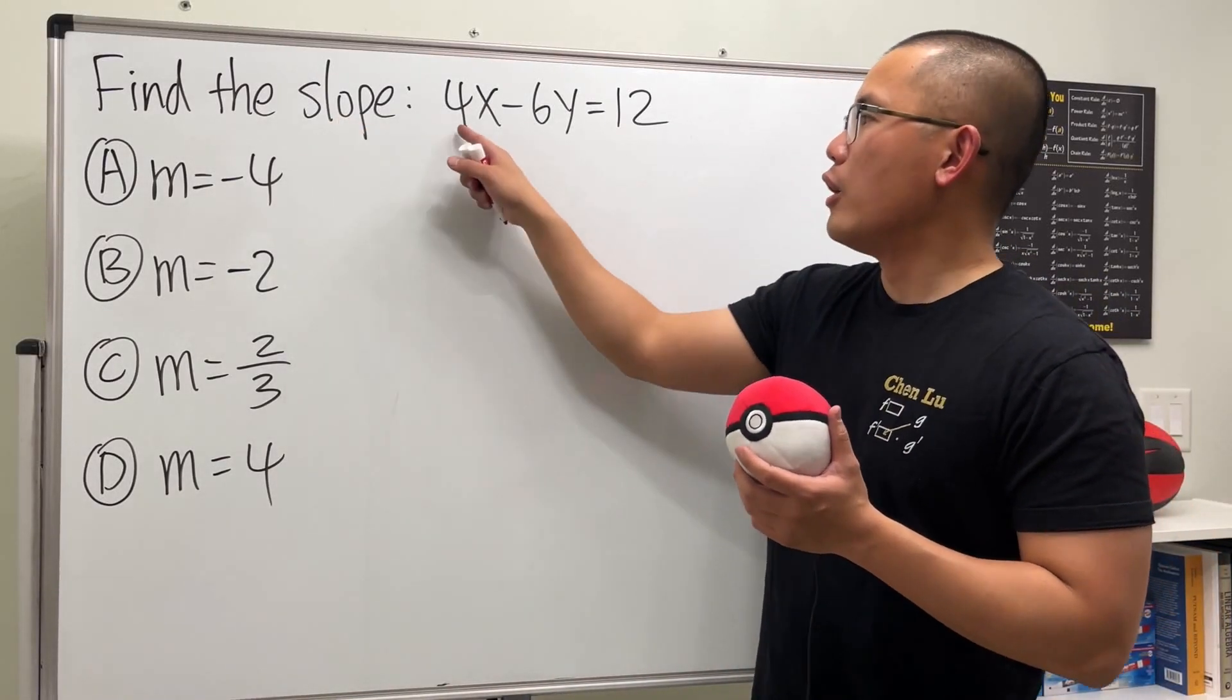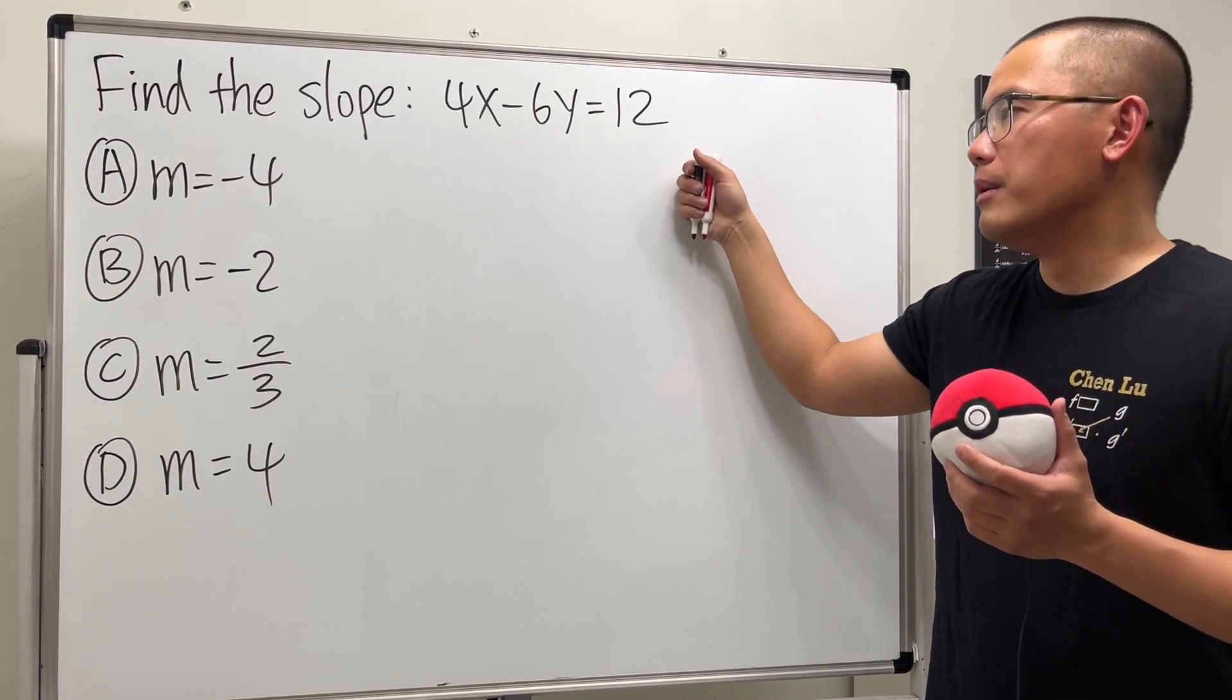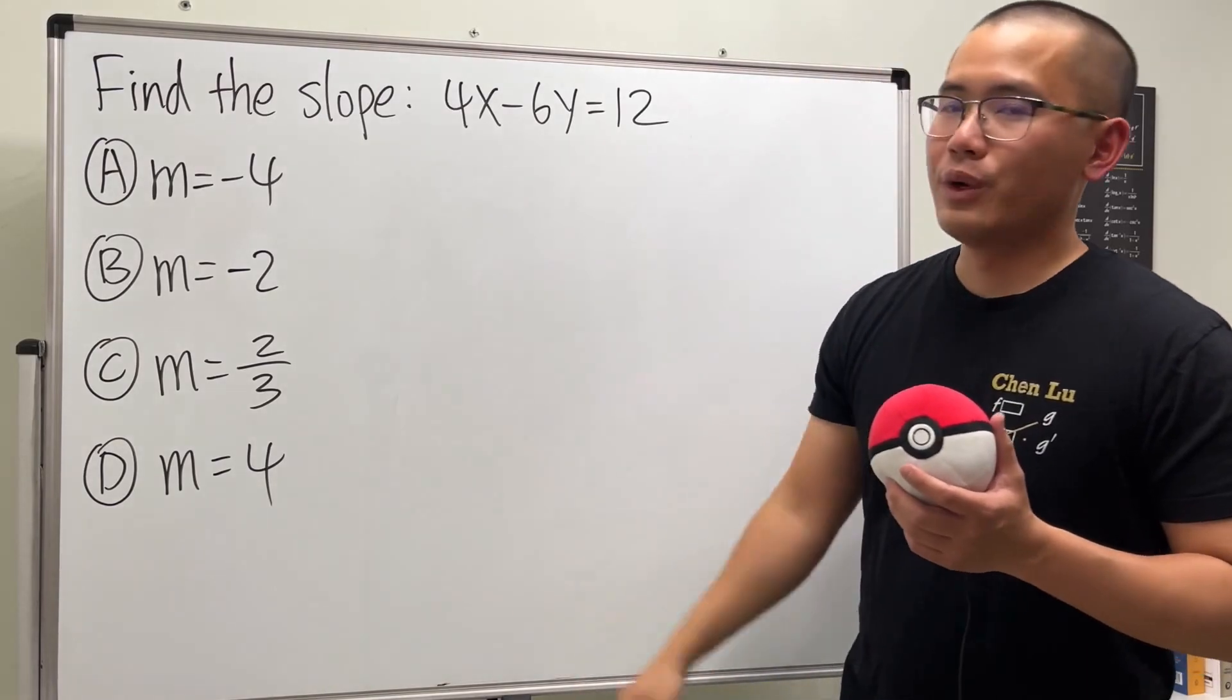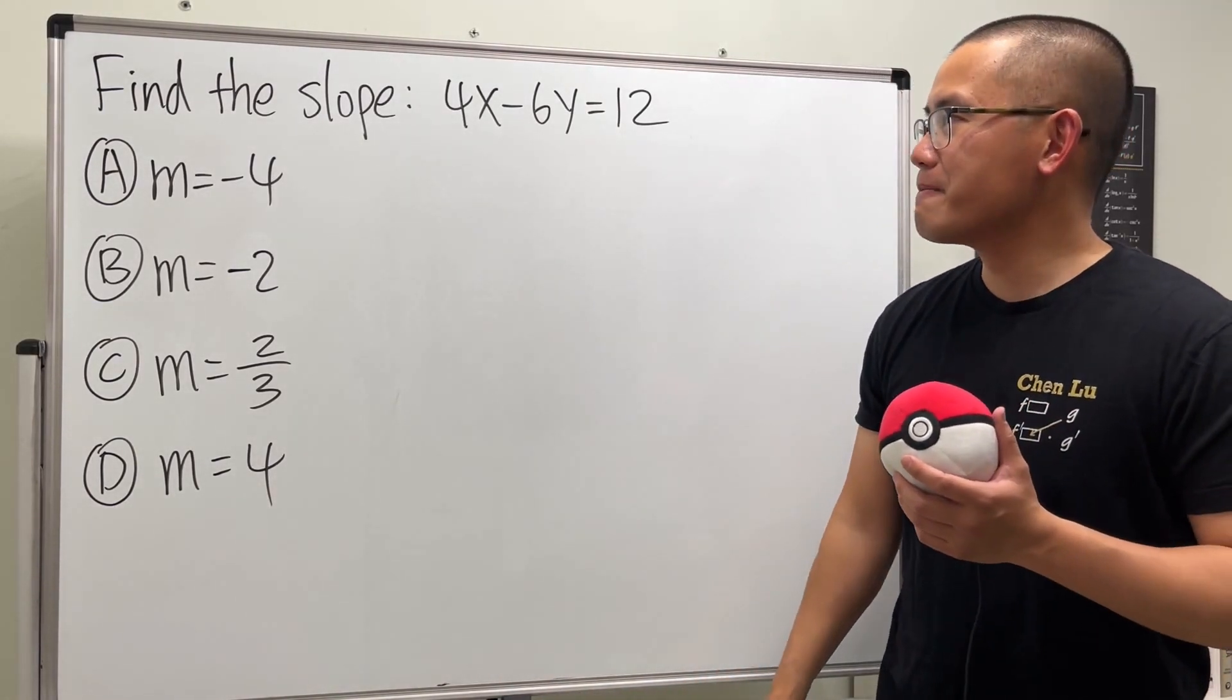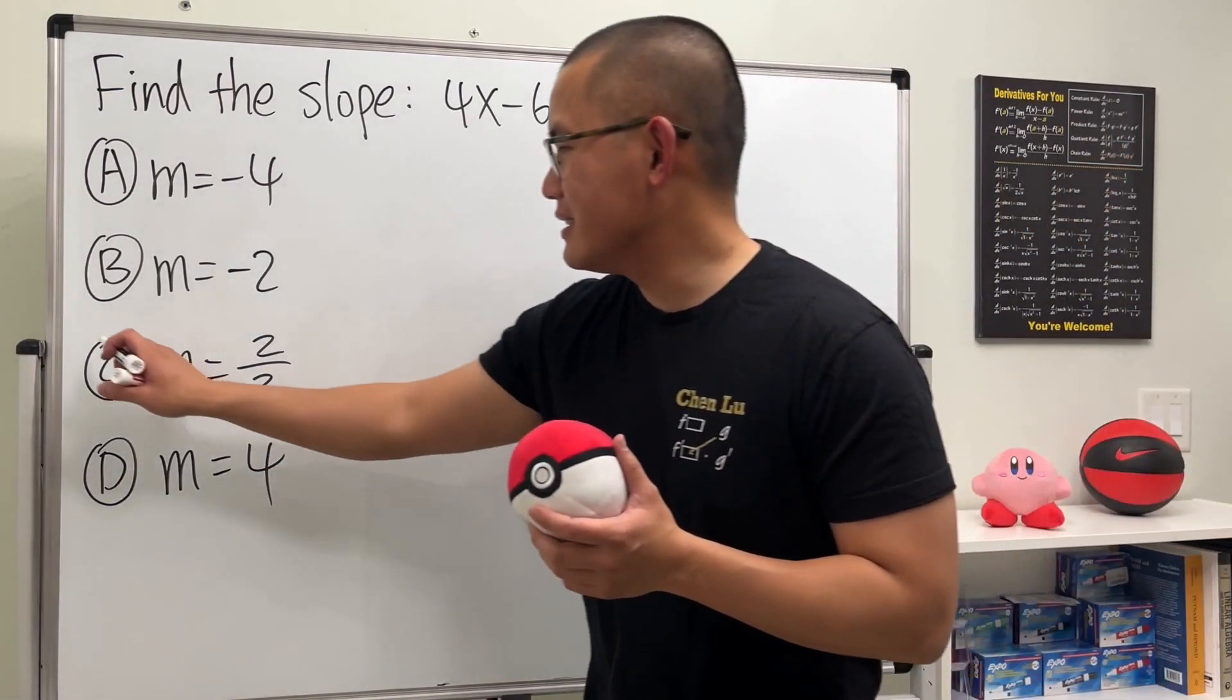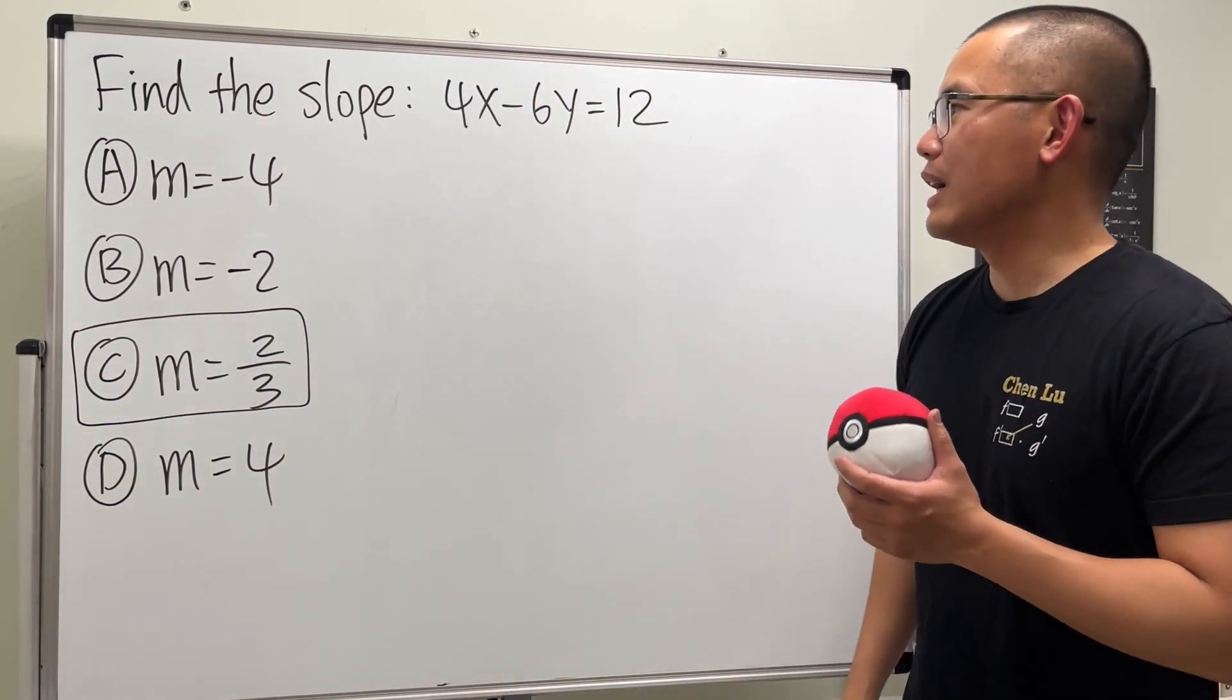We are going to find the slope of this line right here, and this equation is in the standard form. Anyway though, m is for slope. What do you think the answer is? Please pause the video and try it first. Okay, the answer is C: m is equal to two-thirds, and let's see how we can get that.